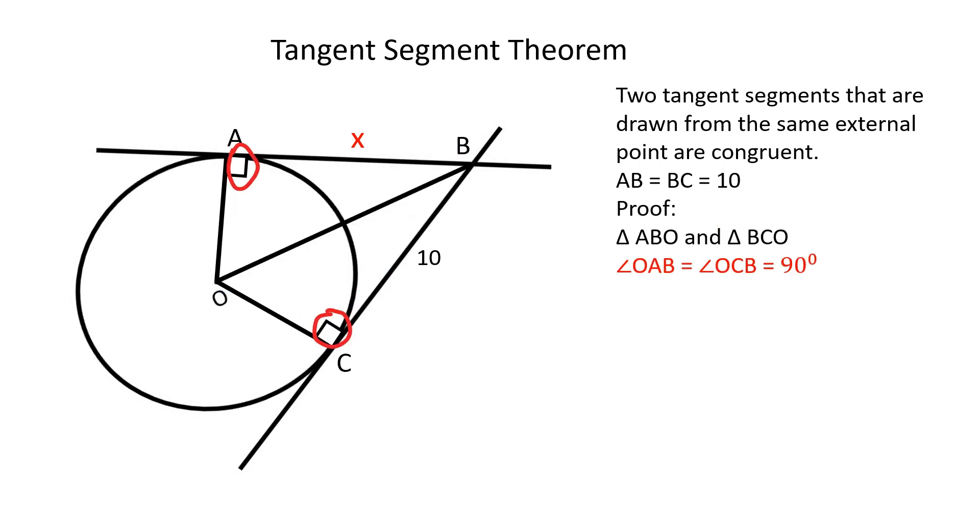Angles OAB and OCB are both equal to 90 degrees because the radius of a circle is perpendicular to the tangent line through its end point on the circle's circumference.